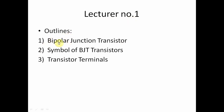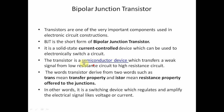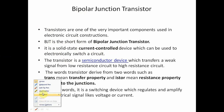Now we will study lecture number one. These are the outlines of lecture number one: first one is the Bipolar Junction Transistor, second one is the symbol of BJT, and third one is the transistor terminals. BJT is nothing but Bipolar Junction Transistor. The transistor is the most important component used in electronic circuits. BJT is a short form of Bipolar Junction Transistor. It is a solid-state current-control device.